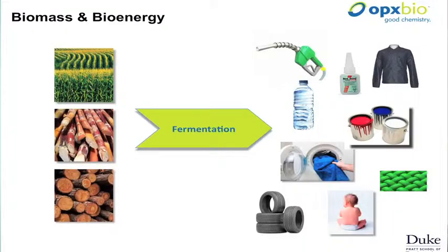Ideally, to replace the whole barrel of oil, we would be looking at using renewable feedstocks — from corn, sugarcane, or even cellulose — converting them not only to biofuels, but other higher-value chemicals as well. The DOE's goal of replacing the whole barrel of oil is actually to make the biomass more valuable to help reduce the costs of biofuels long term.